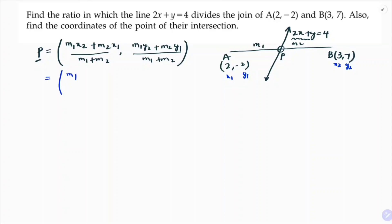Substituting the values: x1 = 2, x2 = 3, y1 = -2, y2 = 7. So x = (m1·3 + m2·2) / (m1 + m2) and y = (m1·7 + m2·(-2)) / (m1 + m2).